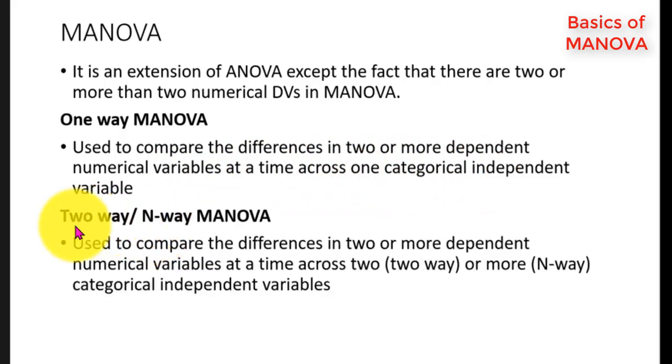Whereas, two-way or n-way MANOVA is used to compare the differences in two or more dependent numerical variables at a time across two or more than two categorical independent variables. If two categorical independent variables are used, we refer it as two-way MANOVA. If more than two, then we say it is n-way MANOVA.